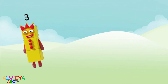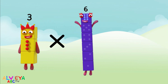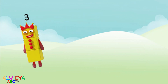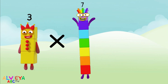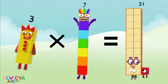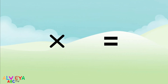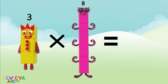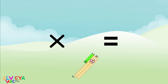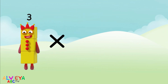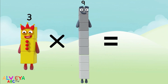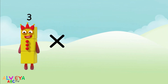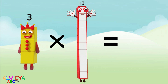Three times six equals eighteen. Three times seven equals twenty-one. Three times eight equals twenty-four. Three times nine equals twenty-seven. Three times ten equals thirty.